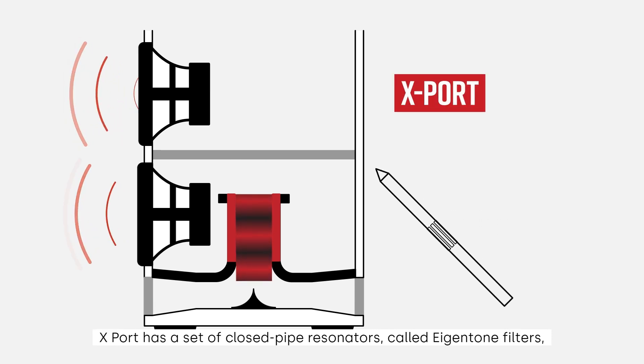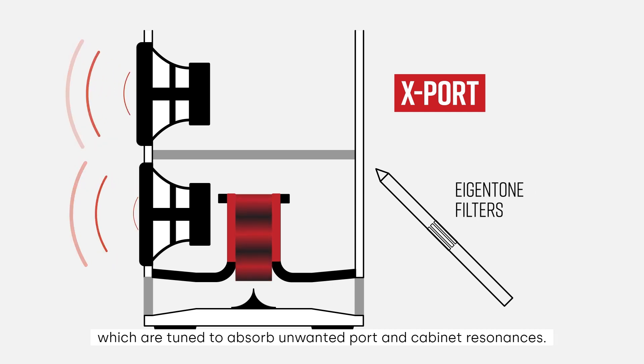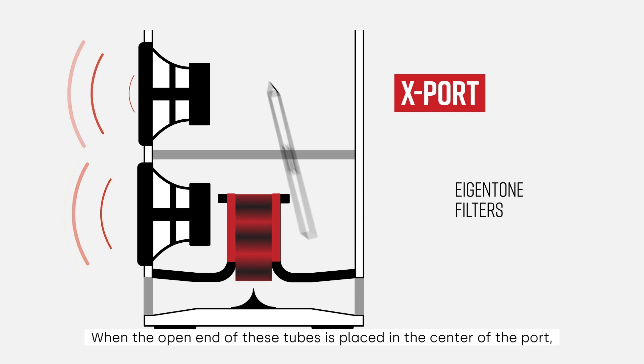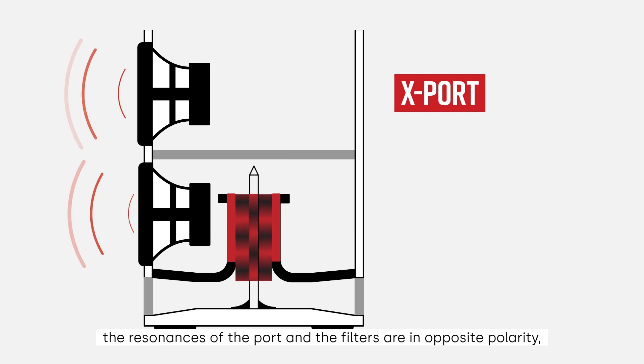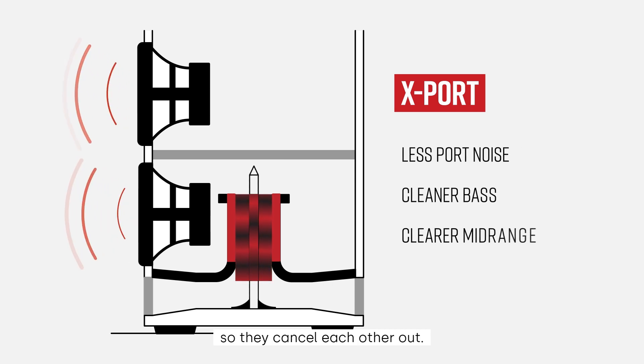X-PORT has a set of closed-pipe resonators, called eigentone filters, which are tuned to absorb unwanted port and cabinet resonances. When the open end of these tubes is placed in the center of the port, the resonances of the port and the filters are in opposite polarity, so they cancel each other out.